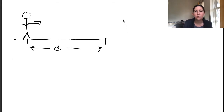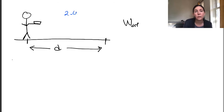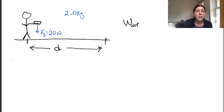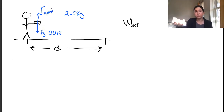The question is: how much work is done on the book by Dr. P? Let's assume the book is 2 kilograms. That means the force of gravity would be m times g, so the force of gravity is 20 newtons. And my force — the force on the book by Dr. P — will be that same 20 newtons, equal forces because we're in equilibrium.